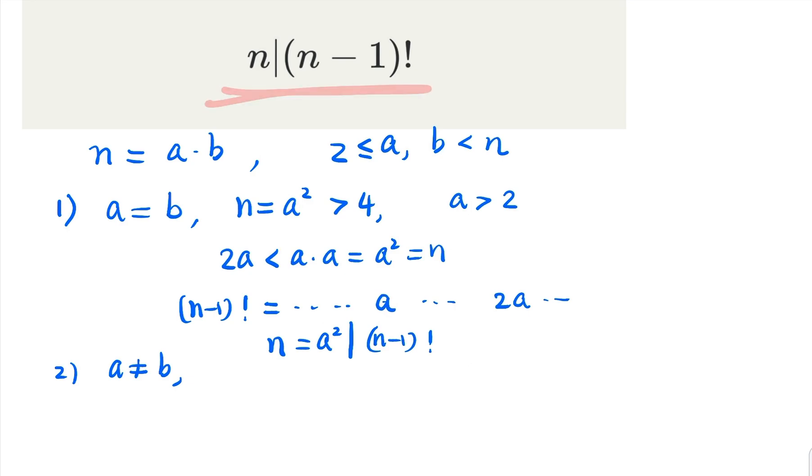So in this case, we have proven this fact. Now, when a is not equal to b, which means it is safe to assume a is smaller than b. Because let a be the smaller one of the two.